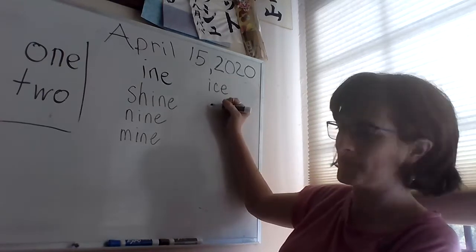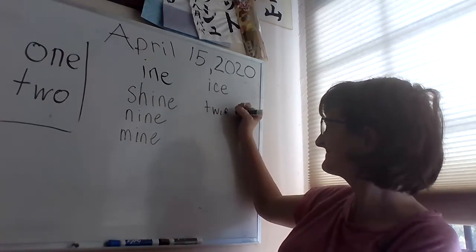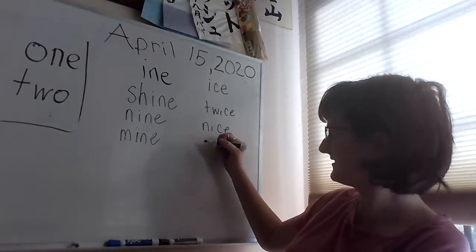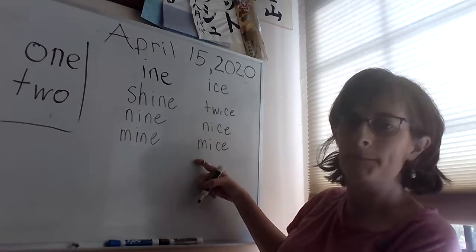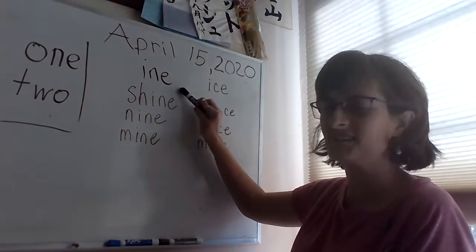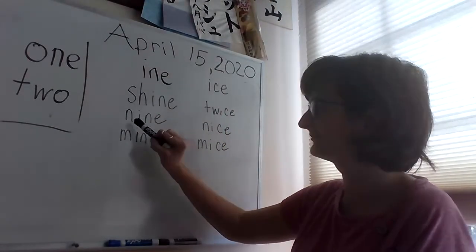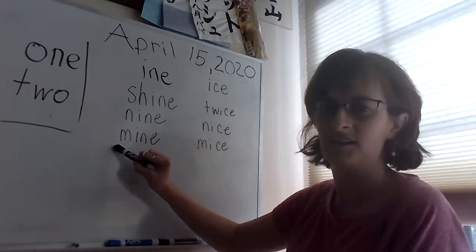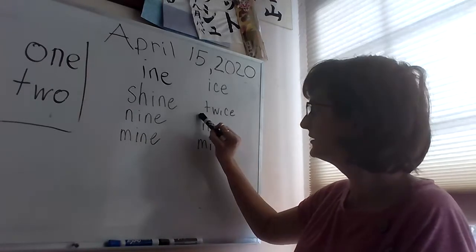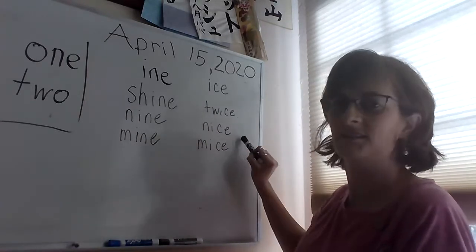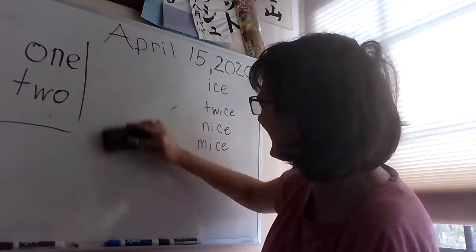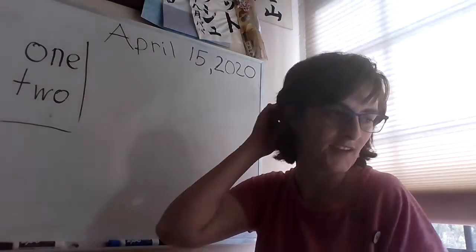Ice, ice, twice, nice, nice. Good job. All right, let's read it all together: I, nine, I shine, nine, mine, ice, ice, ice, twice, nice, mice. Good job. Okay, let me quickly erase. All right, tell me the beginning blend you hear.